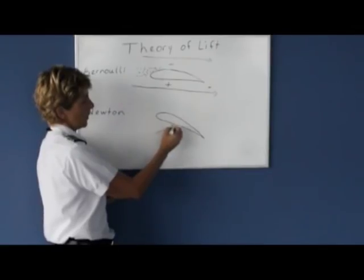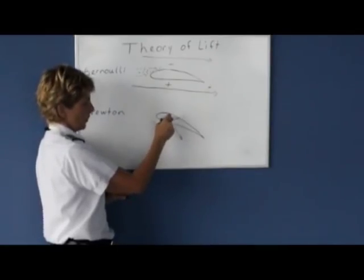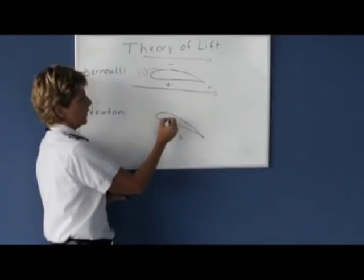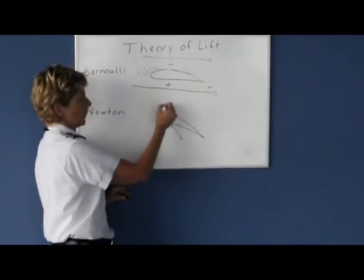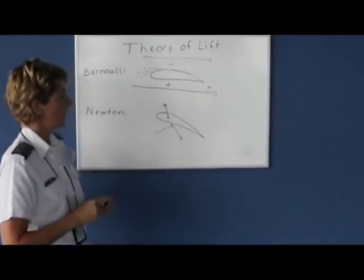So the wind strikes there, and then it bounces down. So for the air deflecting downward off of the wing, the opposite reaction would be for the wing to lift up. So we can also generate lift.